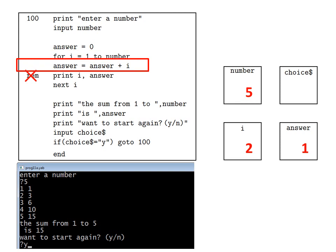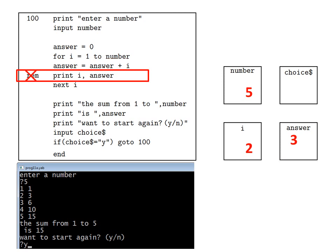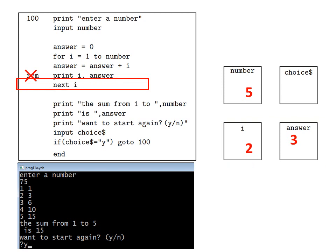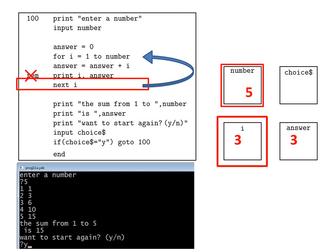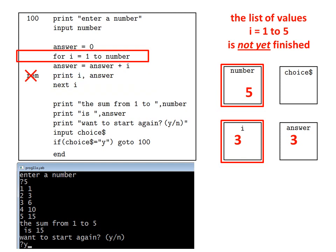So the computer executes answer equals answer plus i, which is one plus two equals three. That value of three is placed back in the memory location for answer. Then the computer executes the diagnostic line print i answer, and we see on the black screen the current contents of the memory locations i and answer. Then the computer executes next i, so the current value of i is increased by one. Then the computer checks if it needs to jump back: i is one to five, and since i is three and does not exceed number, which is five, the computer does jump back and program flow continues from there.